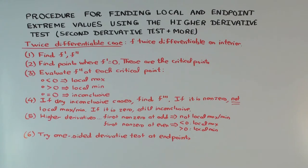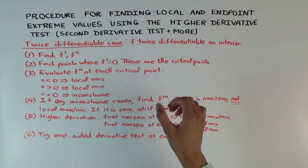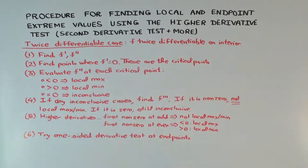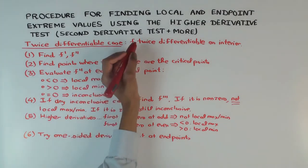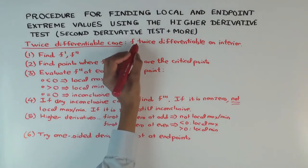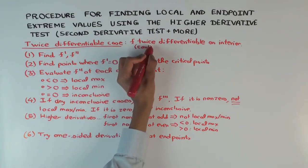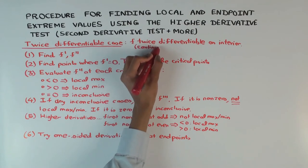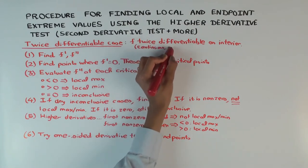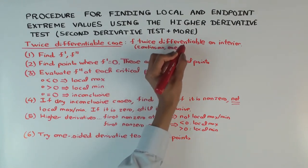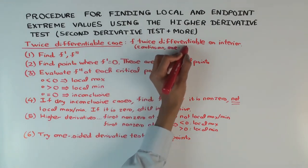We are working with a function which is twice differentiable on the interior of the interval it's defined on, and continuous at the endpoints — and hopefully continuous and one-sided differentiable at the endpoints.